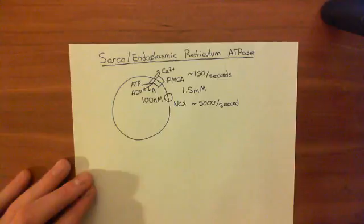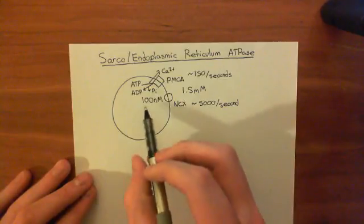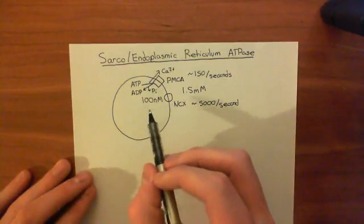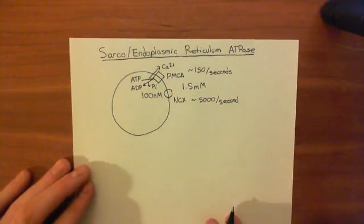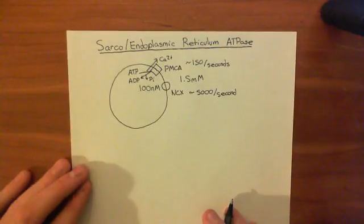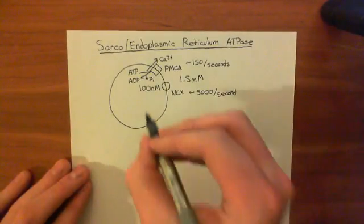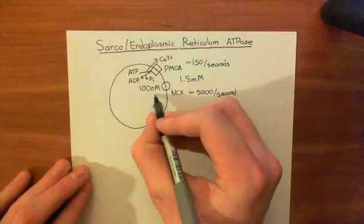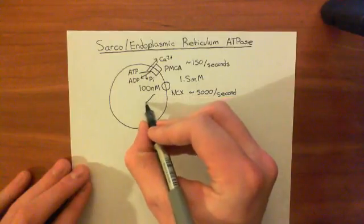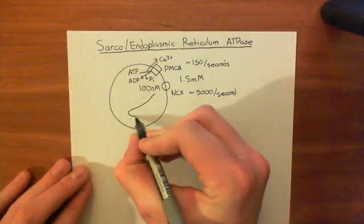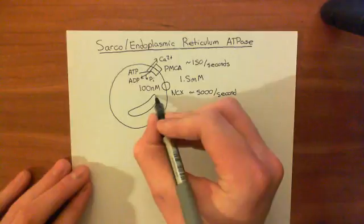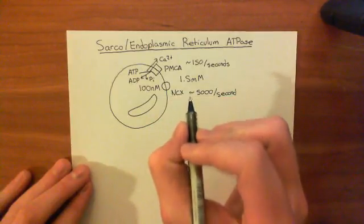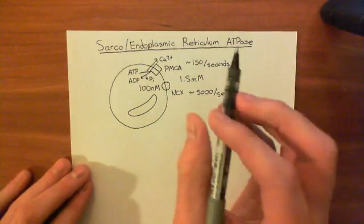Calcium is very, very low — 100 nanomolar in the cytoplasm — but there are intracellular organelles which have a higher concentration of calcium than that. One of them is the endoplasmic reticulum, which is the topic for this video. Another is the mitochondria, but we'll come to that later.